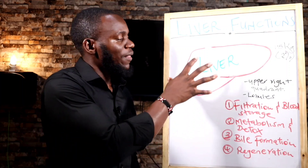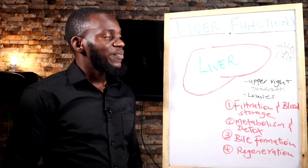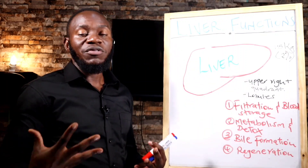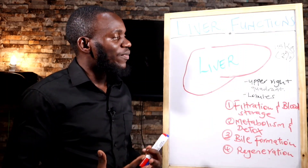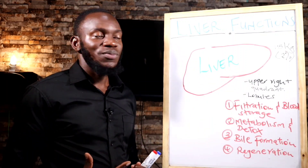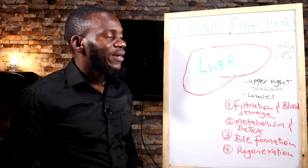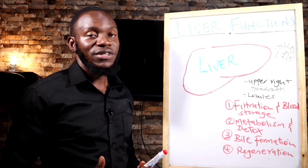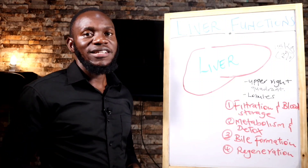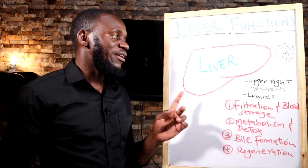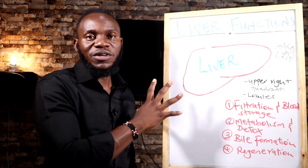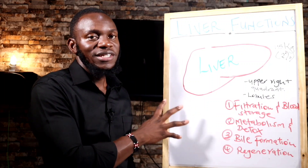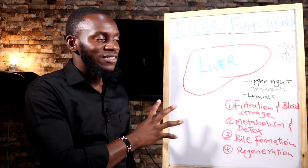The liver is around 1.5 kg, which makes it the biggest organ internally. The largest organ in the body is the skin, but internally the largest organ has to be the liver. It takes about 2% of your entire body weight, and that really tells you it's an organ of importance.